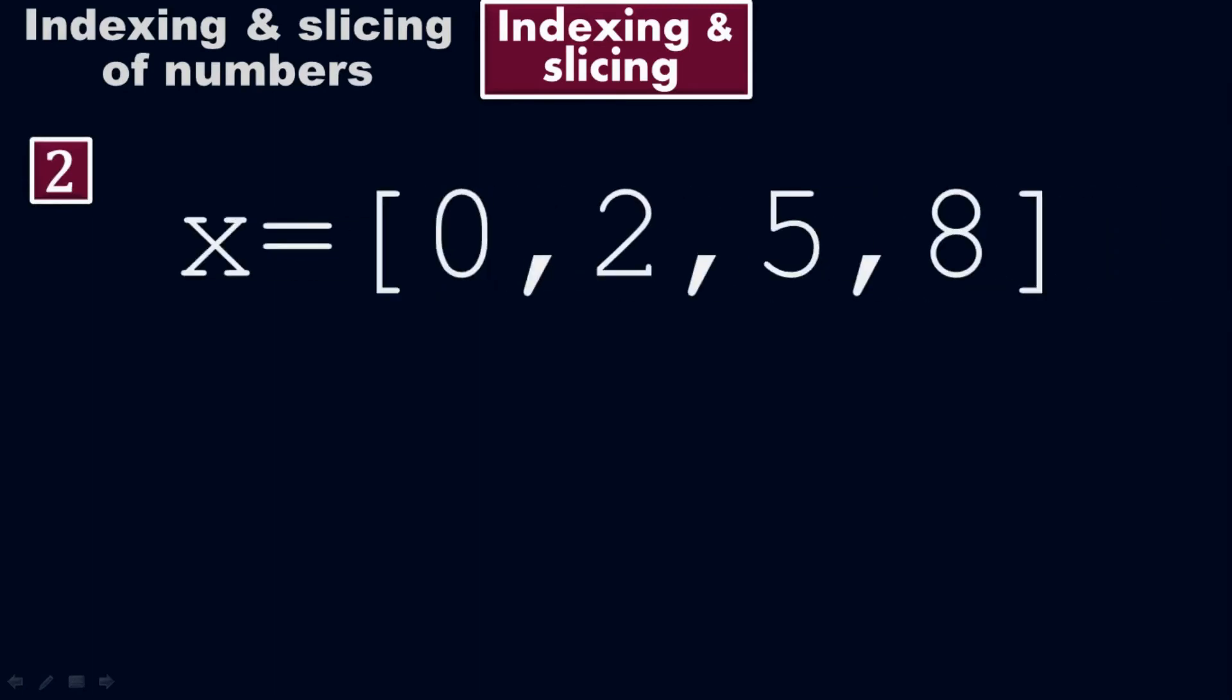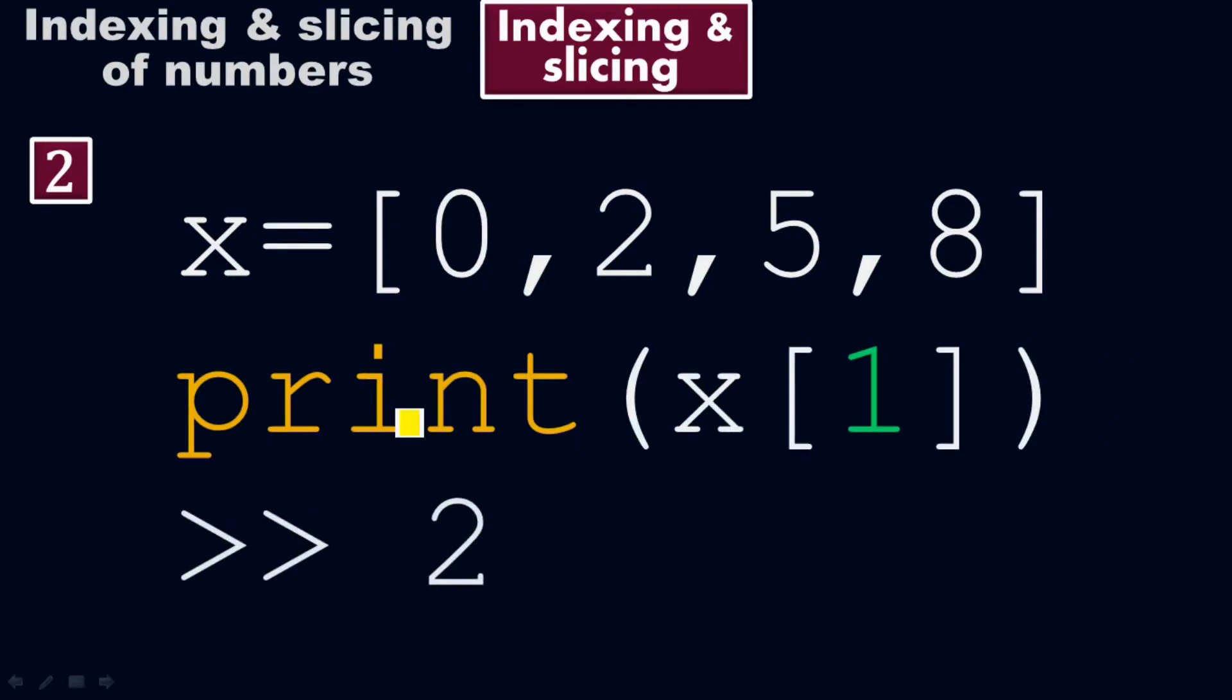Example number 2. x equals to 0 comma 2 comma 5 comma 8. Print of x of 1. It returns 2. Look, this time I put x of 1. I put index 1 here. x of 1 means index 1. So what is the number at index 1? 2 is the number.